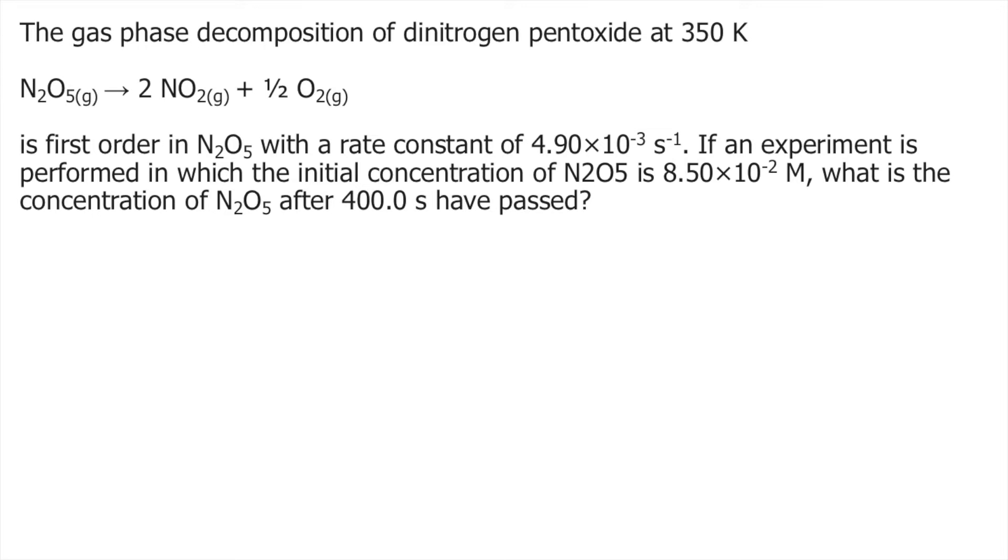The gas phase decomposition of dinitrogen pentoxide at 350 Kelvin - we are given the reaction - is first order in N2O5 with a rate constant of 4.90×10^-3 s^-1.